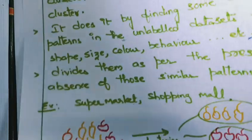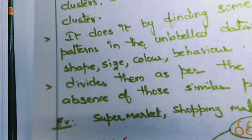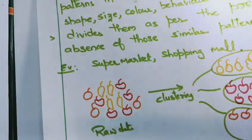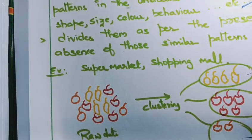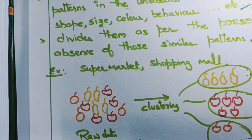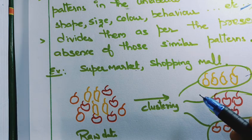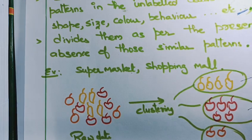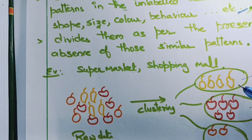For example, if you observe supermarkets or shopping malls, clustering is there. In supermarkets, all fruits and vegetables will be on one side, provisions on one side, grocery items like that. In shopping malls, kids section will be one side, women section will be one side, and so on.